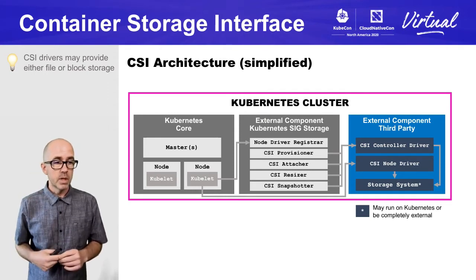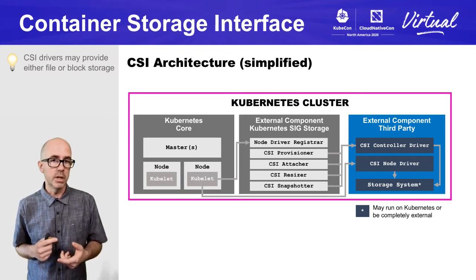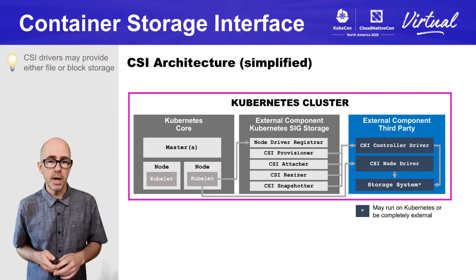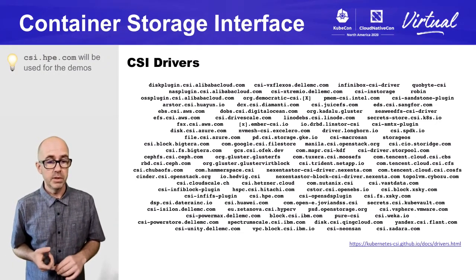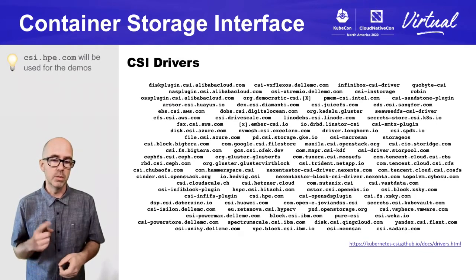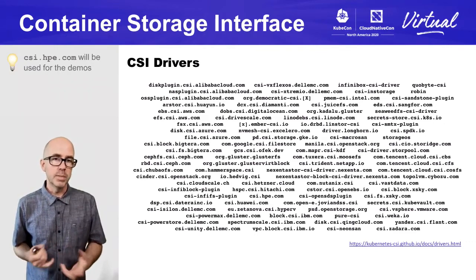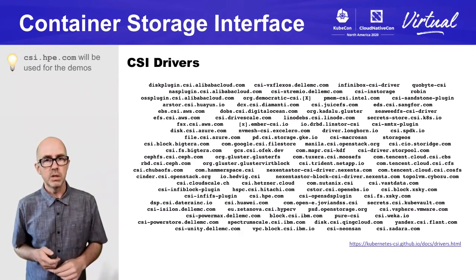CSI drivers today may provide either file or block storage. There are also Kubernetes enhancement proposals around providing object storage with similar semantics. If you go to the CSI driver list URL on the slide, you'll see a list of different drivers and what features they support. I'm going to use the HPE CSI driver for Kubernetes in the hands-on labs, but it doesn't really matter what CSI driver you use as long as it supports the features and specification levels you need.